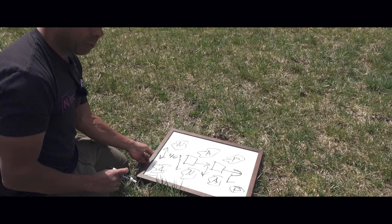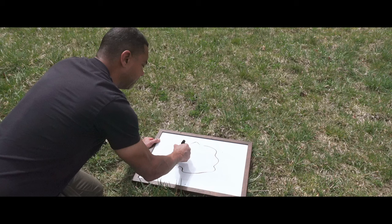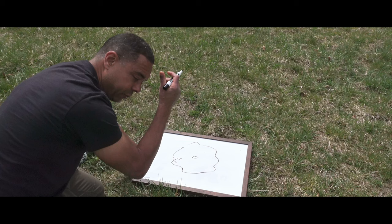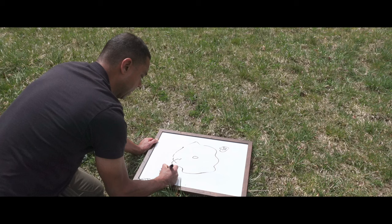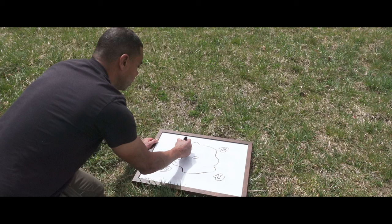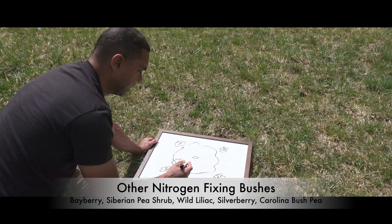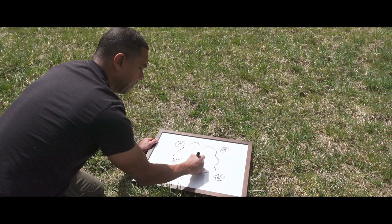Here's our basic guild. I'm going to draw a tree — it's got a main trunk. Around every tree we're going to put blueberries at opposite corners, and then over here we're going to put a nitrogen fixing shrub on opposite corners — that could be sea buckthorn or any number of things. Inside here within 8 to 12 inches we're going to alternately put daffodils and garlic.